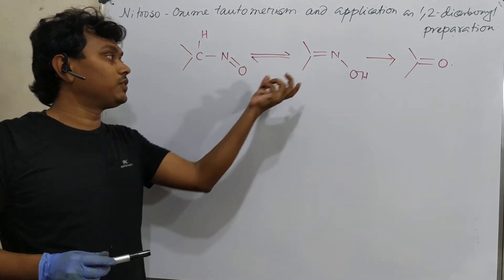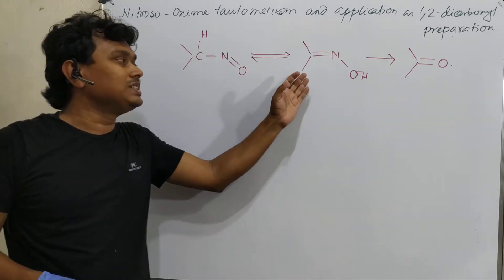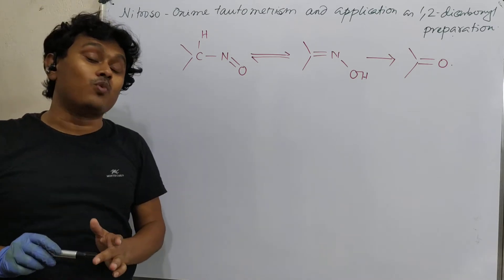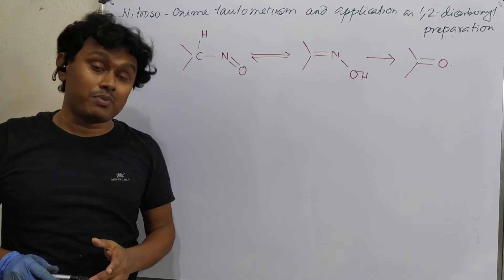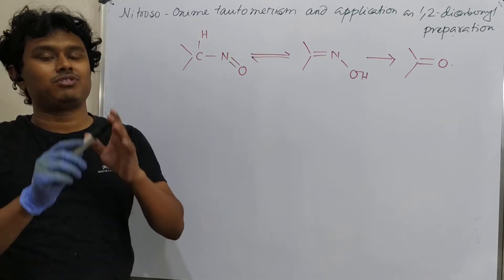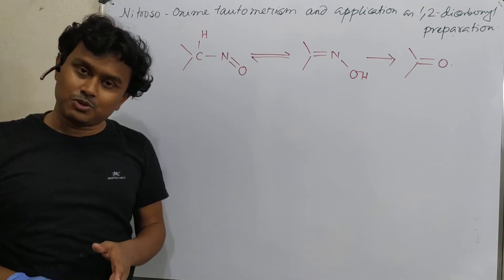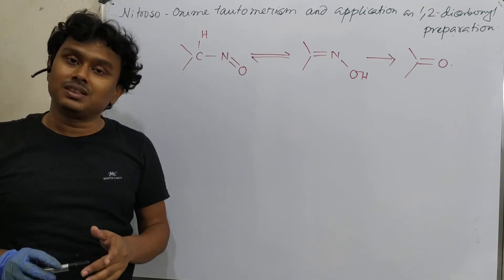The factors which are responsible for this conversion, point number one. Point number two, how this is converted into keto and its application for the preparation of 1,2-diketo compound. Because we know that 1,2-diketo compounds are very reactive and they have a wide number of applications. So a lot of chemistry we will learn in this video. I suggest you please watch until the end.